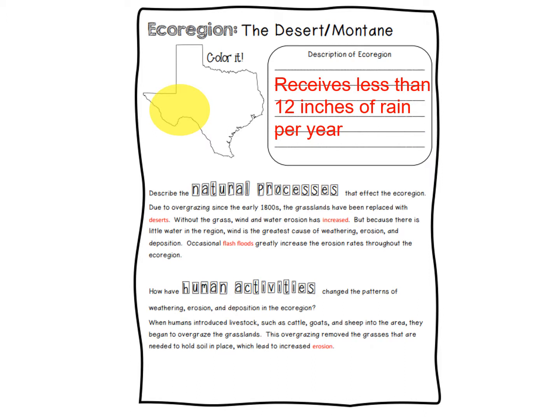The desert, which technically we can be considered part of, is going to not receive very much rain, although we receive a little bit more than this. One of the big things that we've done to all the ecoregions is overgrazing — we've brought in cattle, sheep, all sorts of things. Overgrazing can lead to more erosion. That's one way we have affected this ecoregion.